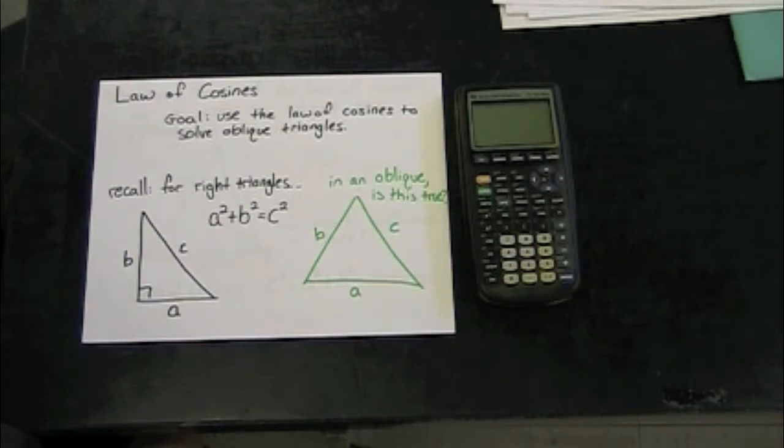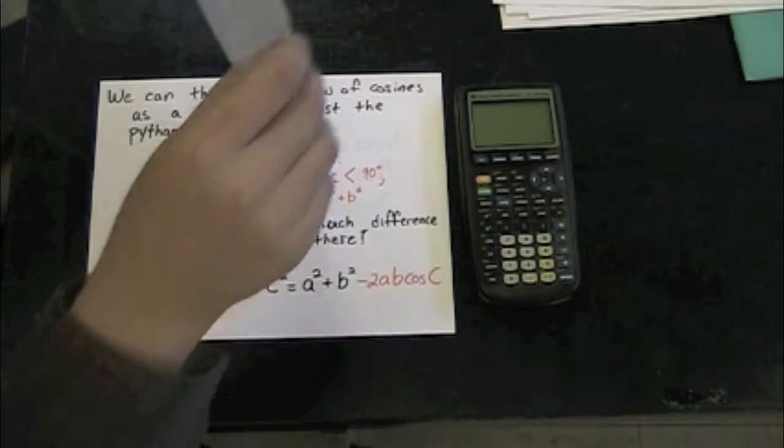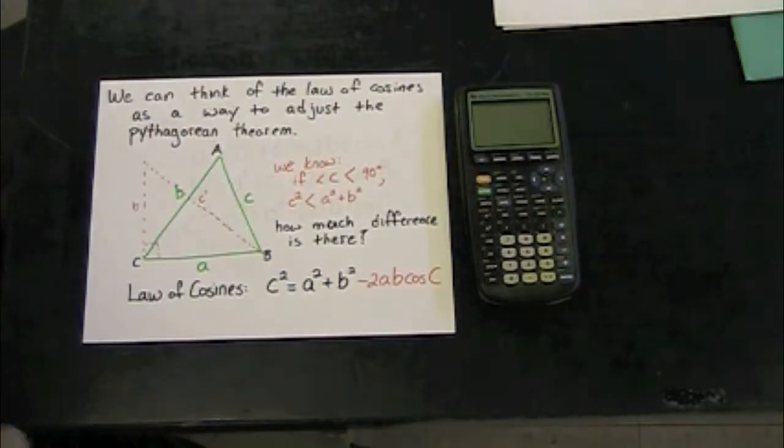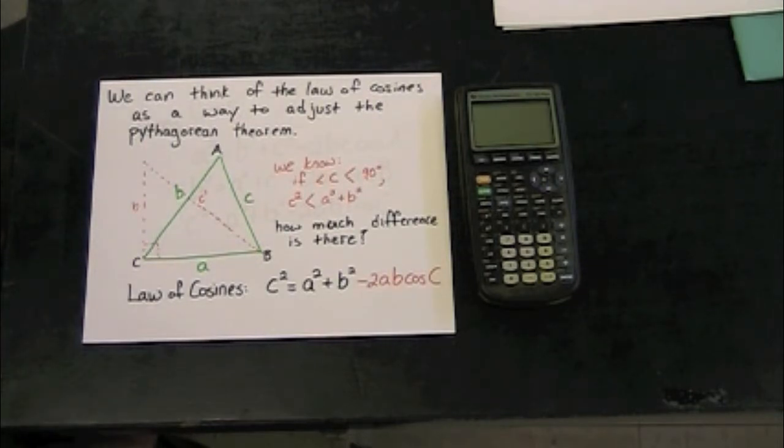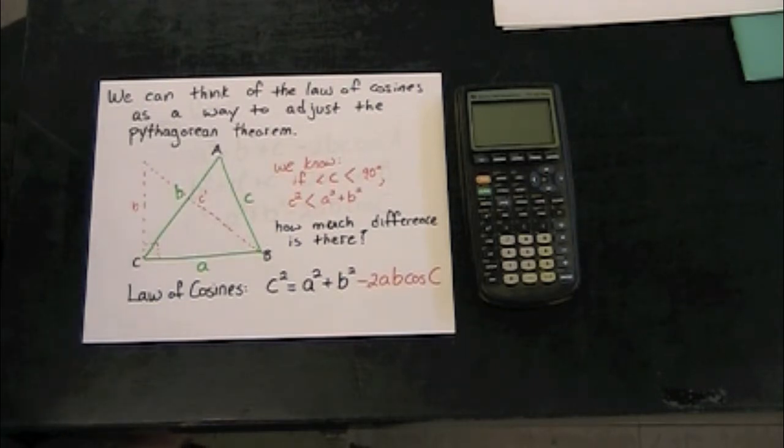The question that I have is, in an oblique triangle, is this true? And of course we know it's not, but we can think about the law of cosines as a way to adjust the Pythagorean theorem for oblique triangles.